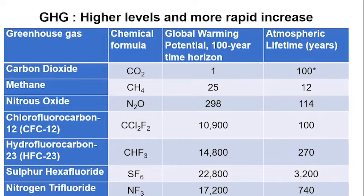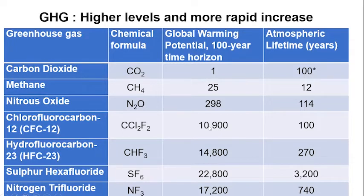Also important is the concept of global warming potential. We assign carbon dioxide a value of one as a unit of measurement. Methane is about 25 times more potent than carbon dioxide. CFC-12 — chlorofluorocarbons largely used in the refrigeration sector — is about 11,000 times more potent than carbon dioxide. That means if you had one ton of CFC-12, it would do as much damage as 11,000 tons of CO2. These are very important issues to remember when you're negotiating on climate change.